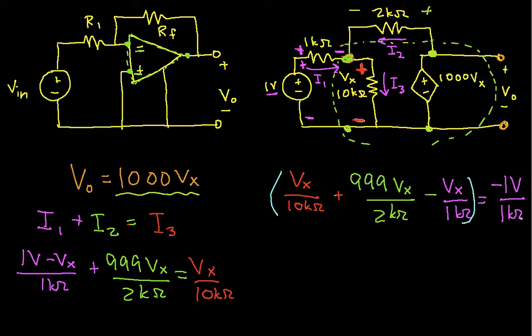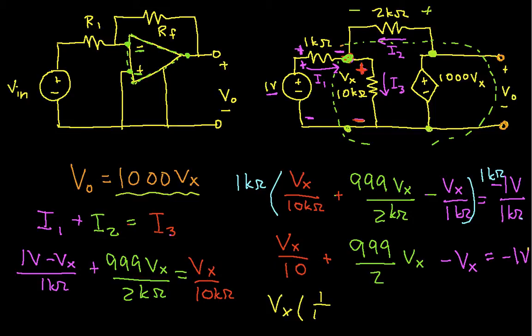Now if I take this equation and multiply this side by 1k ohm and this side by 1k ohm, I will have Vx over 10 plus 999 over 2 Vx minus Vx is equal to minus 1 volt. So now I factor out a Vx. 1/10 plus 999 over 2 minus 1 is equal to minus 1 volt.